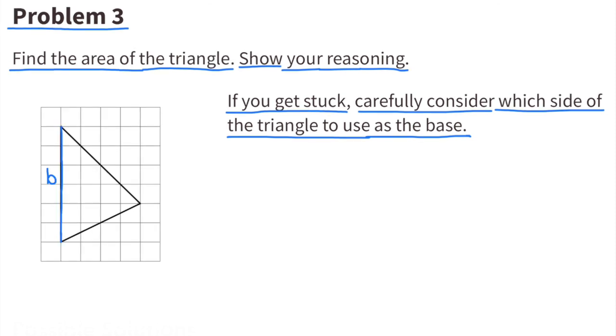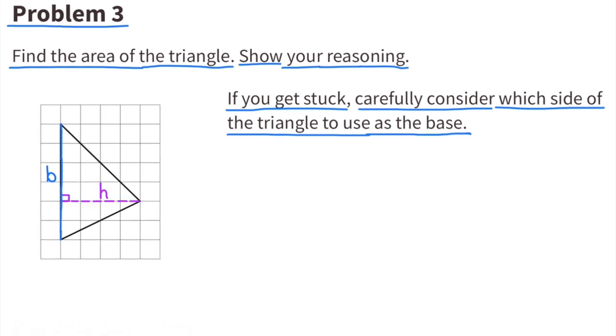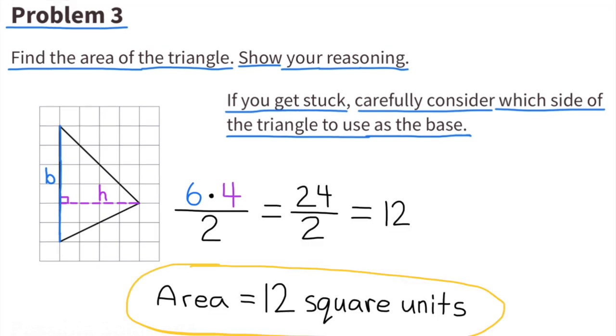I've used the vertical line on the left side as the base, which is 6 units long. I've used this line at a 90 degree angle compared to the base as the height, which is 4 units long. 6 times 4 is 24, and 24 divided by 2 is 12. The area is 12 square units.